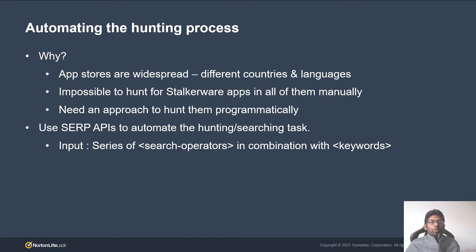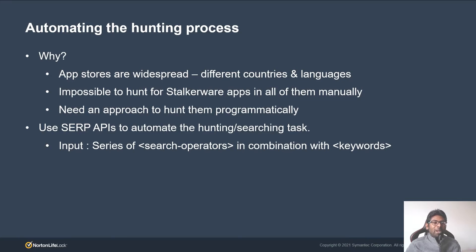After collecting search operators and keywords, we can automate the hunting process. Why automation? If you Google alternatives for the Play Store, you may spot 5 or 10 third-party app stores, but in reality there are plenty of them. Manually hunting stalkerware apps across all app stores will be a time-consuming task. We need an approach to hunt them programmatically. That's where SERP API comes in.